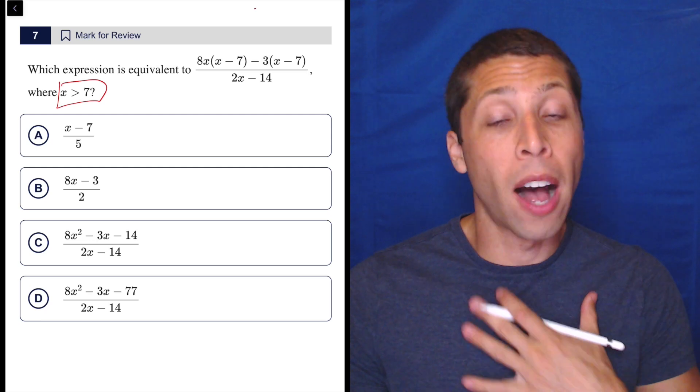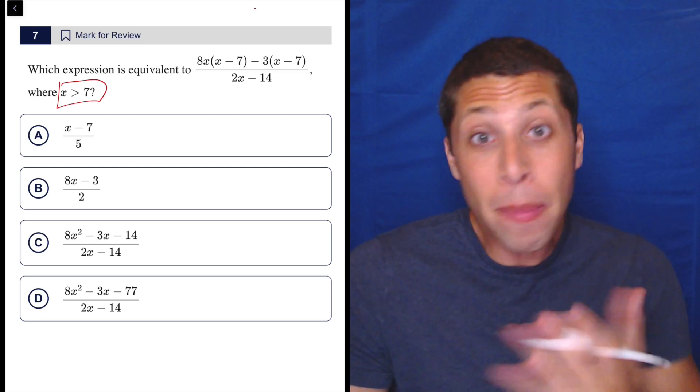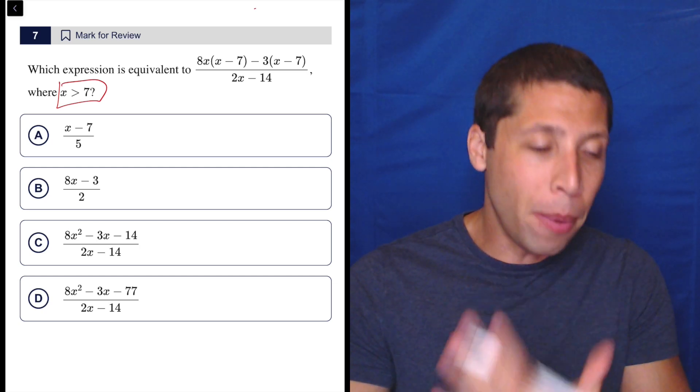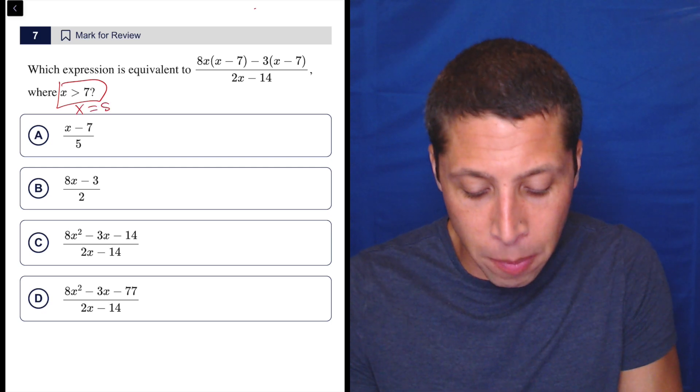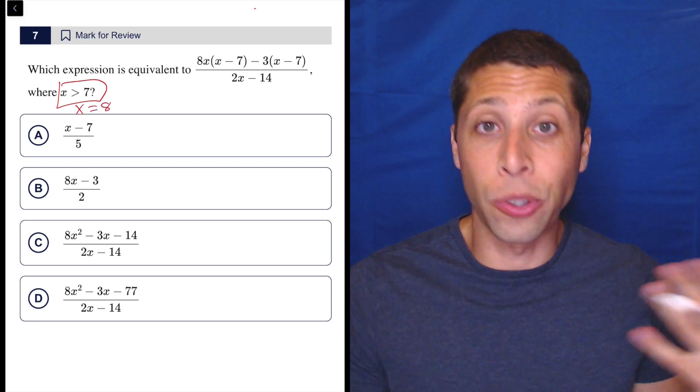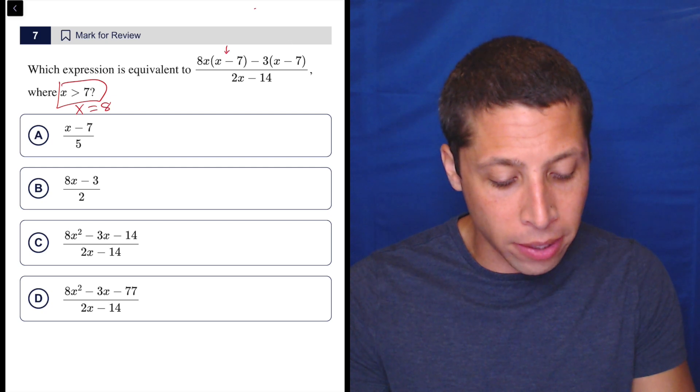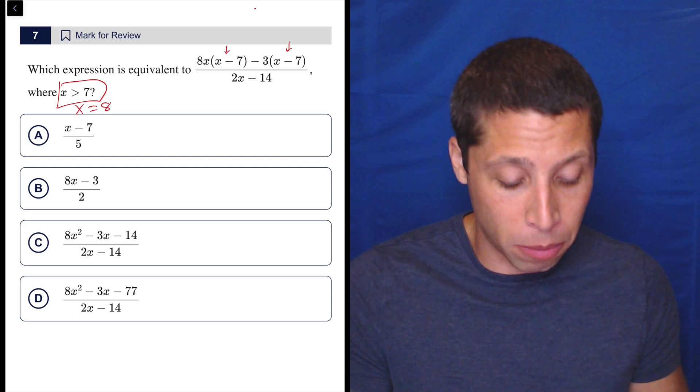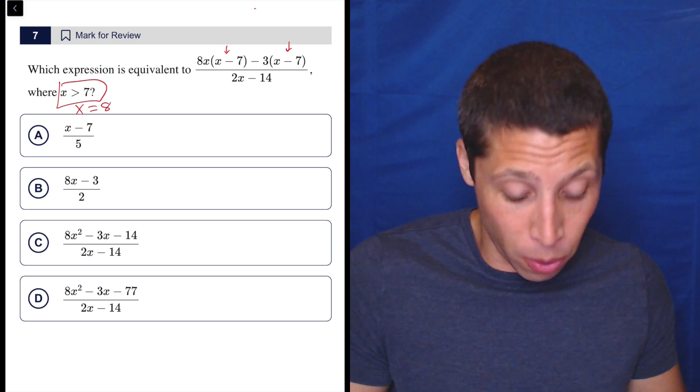So my normal move of picking X equals zero or X equals one isn't going to work here. Maybe there is a way that it'll work, but I tend to follow whatever instructions I'm given. So I'm going to do the next best thing. Let's just make X equal to eight. That also has the benefit of simplifying these parentheses terms because eight minus seven is one. So we don't have to deal with as much complexity. So even though we're not plugging in one, we kind of end up with one anyway.